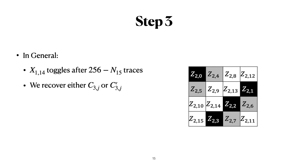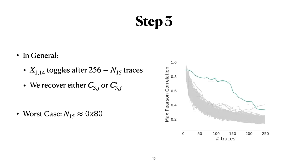Of course, the worst case scenario is that the value n15 is approximately 128, which means that half of the traces use one constant and the other half the other. So what we would see in a DPA attack is that for the first half of the traces, one of the constants wins. But then as we go to the second half, it actually starts to lose to the other constant. Let me show you how we deal with this in our example.